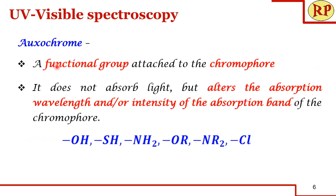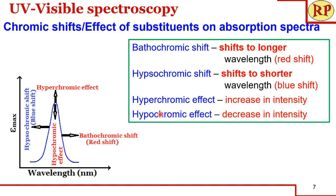An oxochrome is a functional group attached to the chromophore. The oxochrome does not absorb light on its own, but it alters the absorption wavelength or intensity of the absorption band of the chromophore. For example, an –OH group will not absorb any light, but when attached to the chromophore it will alter its absorption wavelength and intensity.